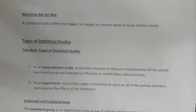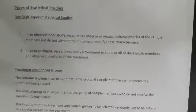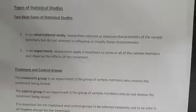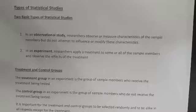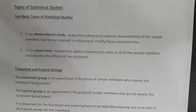Now we talk about watching out for biases. Statistical studies suffer from bias if their design or conduct tends to favor certain results. There are two basic types of statistical studies: observational studies and experiments. In an observational study, the key is that you're observing — not influencing anything. There's no variable and control; you simply look at what happened and record numbers.